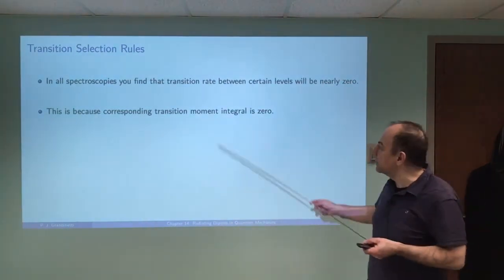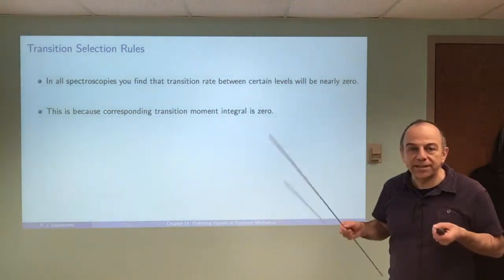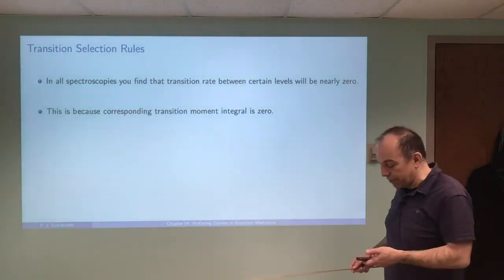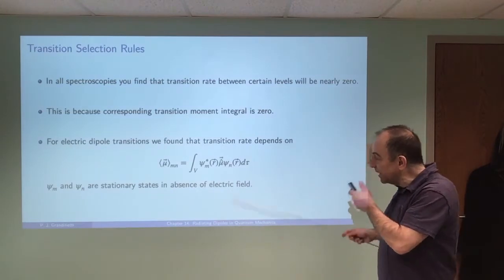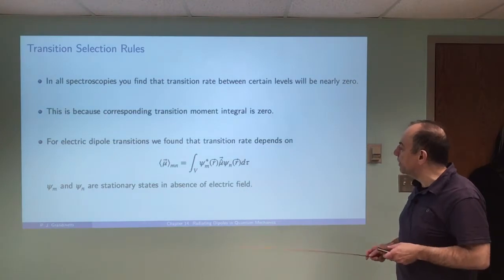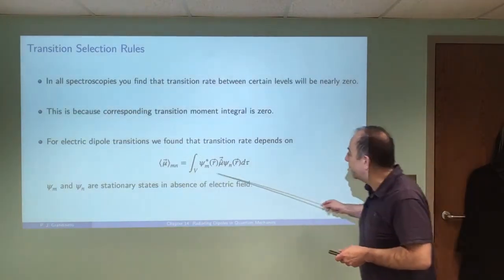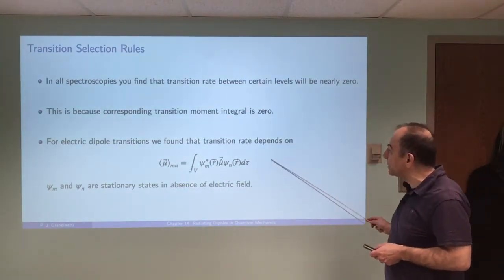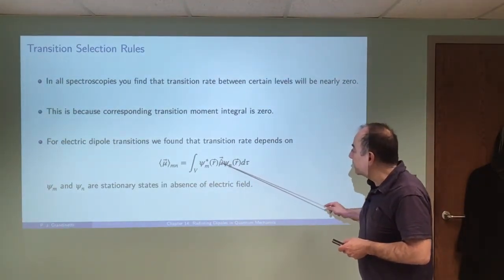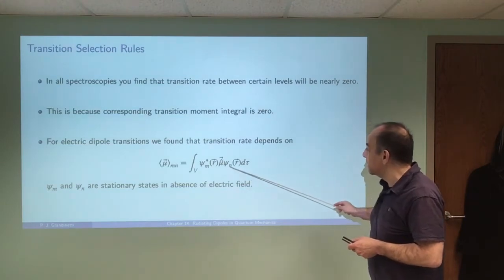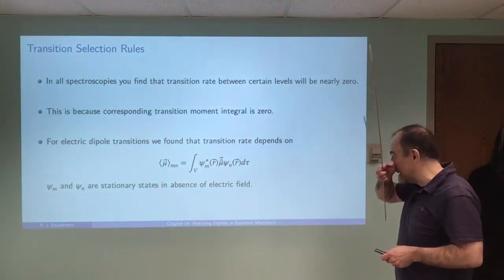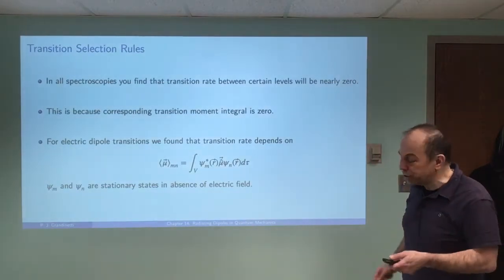That will be because the transition moment integral for that particular transition will evaluate to be close to zero or zero. So let's take a look at electric dipole transitions, which we've looked at in this chapter, and let's look at evaluating this transition dipole moment integral, which involves the dipole moment operator and the stationary states between the levels that we're trying to connect with either light emission or absorption.